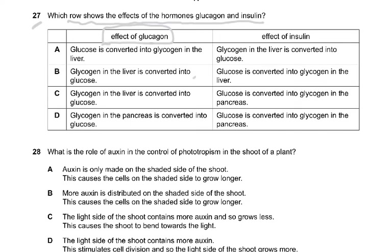The only possible answers are where glycogen in the liver is converted to glucose — so that narrows it down to B and C. This rules out answers where the process occurs in the pancreas, or where glucose is converted to glycogen. Now looking at insulin: insulin converts glucose to glycogen. Glucose converted to glycogen in the liver — yes, that is correct, so the answer is B. The option stating this happens in the pancreas is wrong — there is no glycogen in the pancreas.